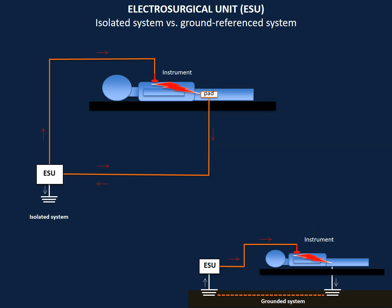The electrosurgery unit requires the presence of a circuit for current to flow. When using a monopolar instrument, the circuit is composed of the generator, which is the source of the electron flow and voltage; the instrument, which acts as the active electrode; the patient; and the patient-return electrode. The current flows between the electrodes through the patient's body, and generates the required heat for the electrosurgical effect.